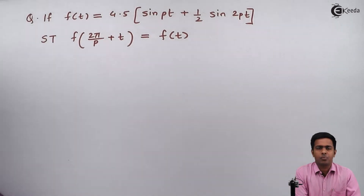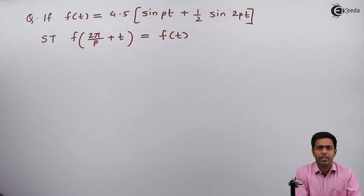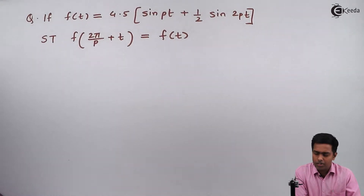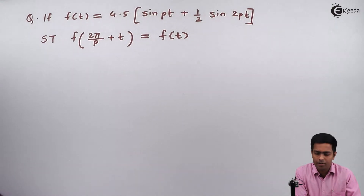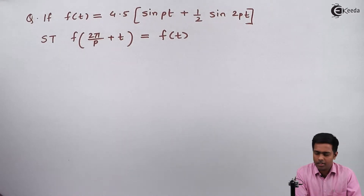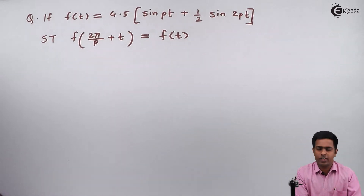f of t is given as 4.5 in the bracket sin(pt) plus 1 by 2 sin(2pt), and we have to show that f of (2π/p + t) is equal to f of t.